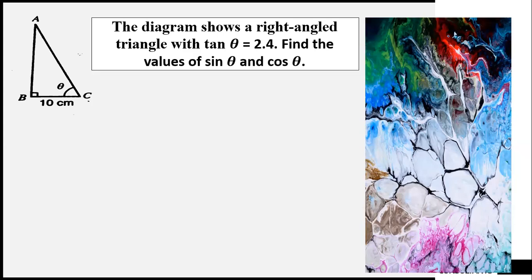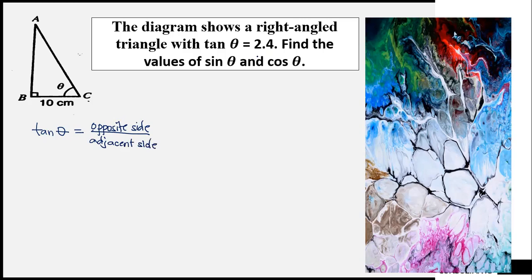Tan theta is given as equal to 2.4. Tan theta is equal to the opposite side divided by the adjacent side. The opposite side of tan theta is line AB, and the adjacent side of tan theta is line BC.